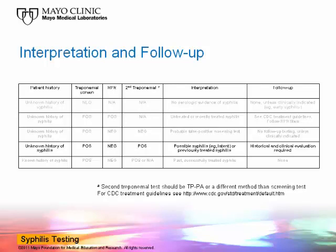I should highlight that the second treponemal test should be a different method than the one used for screening, and the CDC has recently recommended that TPPA be used to resolve discordant screening treponemal and RPR results. In the fourth scenario, a patient with unknown history tests positive by the treponemal screening assay, negative by RPR, but also positive by the second-tier treponemal test. These results are consistent with several different interpretations depending on the historical and clinical evaluation. If the patient has been treated in the past with an antimicrobial with anti-treponemal activity, these results could be suggestive of past, successfully treated disease. However, if the patient lacks any treatment history, these results may be consistent with latent syphilis, which may require treatment.